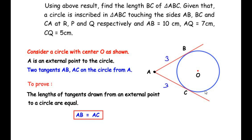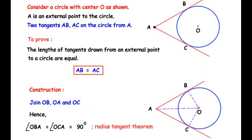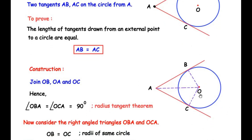Let us begin with a small construction using the same figure. In the first step, we are going to join OB, OA and OC. Once we do this construction, we can say that angle OBA is equal to angle OCA, and both angles equal 90 degrees. We can say this by the radius-tangent theorem, which states that any radius of the circle touching a tangent at the point of contact makes a 90 degree angle. So OB makes 90 degrees with tangent AB, and OC makes 90 degrees with tangent AC.